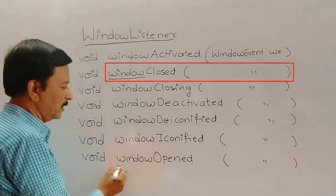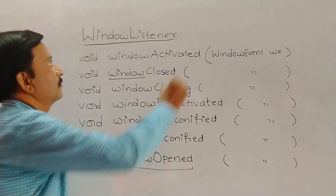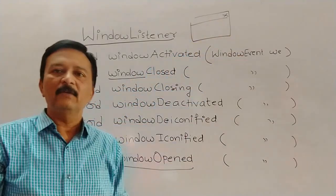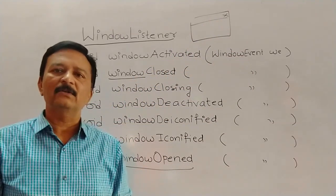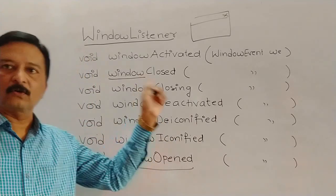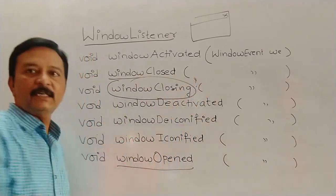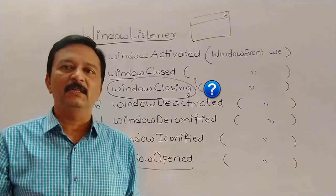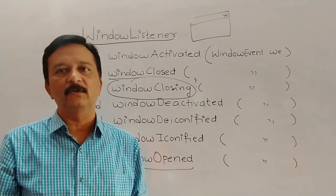Now, windowClosed and windowOpened: when a window is opened that is windowOpened, and when it is closed, that is windowClosed. If you have seen any window application, at the top there is a close button. When you click that close button, the application gets closed. Now, windowClosing is different from windowClosed. WindowClosed means the window is simply closed. WindowOpened means a file is opened. WindowClosing means the process that happens while the window is being closed.